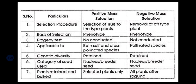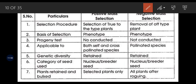The key difference between positive and negative mass selection is: in positive mass selection, true-to-type plants are selected, whereas in negative mass selection, off-type plants are removed. Similarities include: both use phenotypic performance as base material, progeny test is not conducted in either, both are applied in self- and cross-pollinated species, genetic diversity is retained, category of seeds used is nucleus and breeder seed.